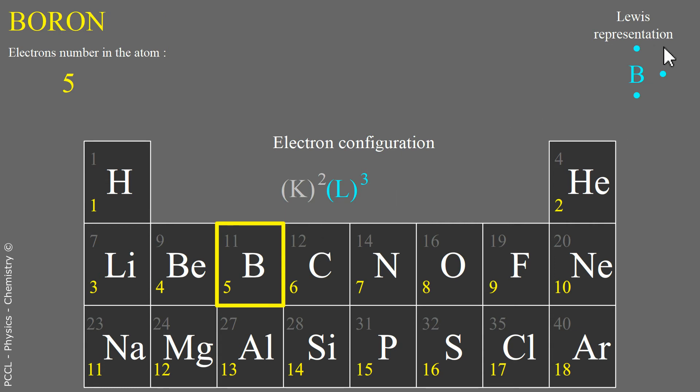Boron has three valence electrons. And carbon has four. This is why methane, CH4, exists.